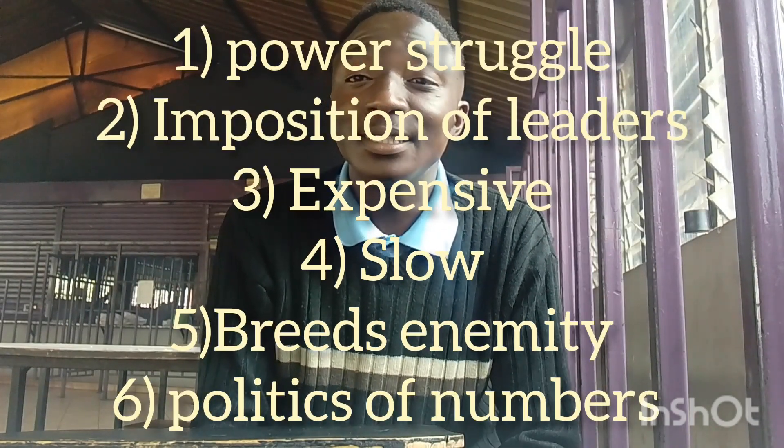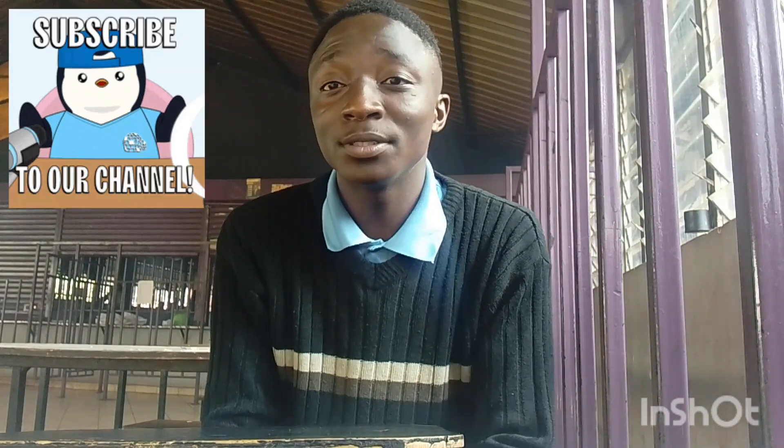Many people have criticized democracy for particular reasons. Some claim that in a democratic country there is a power struggle. Some claim that democracy is expensive to implement. Others claim that democracy is slow because it does not act fast. Others also claim that democracy creates enmity because there is a majority and minority party — the majority party forms the government whereas the minority party forms the opposition, creating enmity between the opposition and the ruling party.